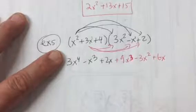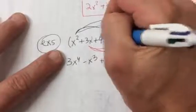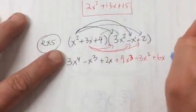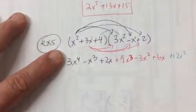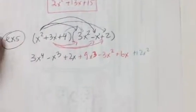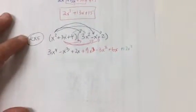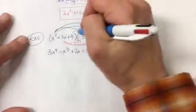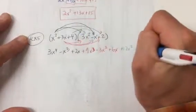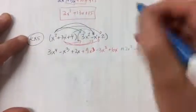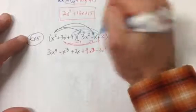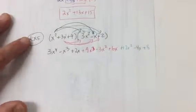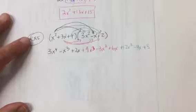And then, for our last one, let's use green for that one. We're going to distribute the 4. 4 times 3x squared is plus 12x squared. Let me make all that fit. There we go. 4 times negative x is minus 4x. And then, 4 times the 2 is plus 8. Now, let's combine all of our like terms.